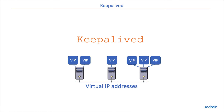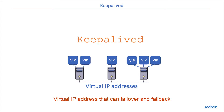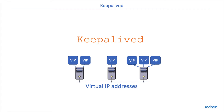In short, Keepalived supports one or more IP addresses that can failover from one server to another and back, just to keep services available. These addresses are commonly referred to as virtual IPs.